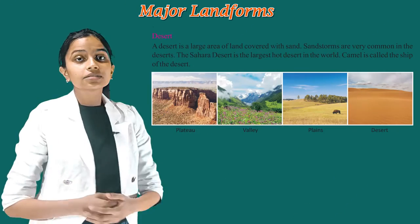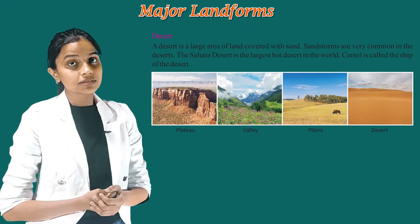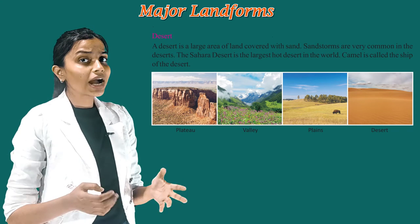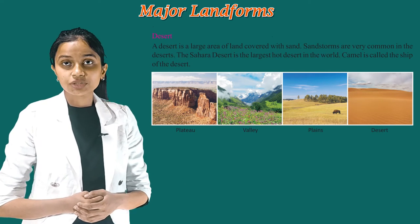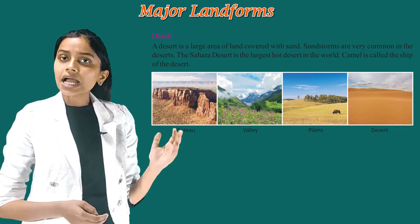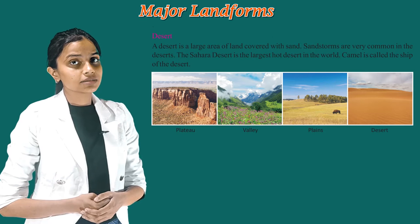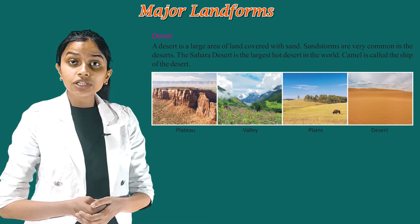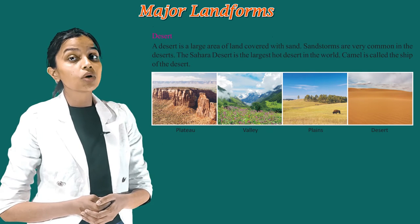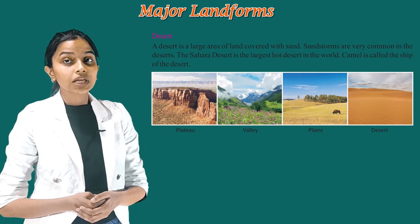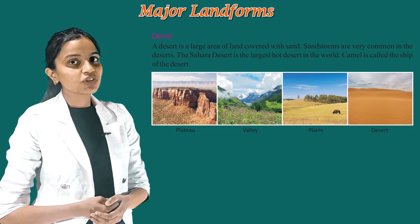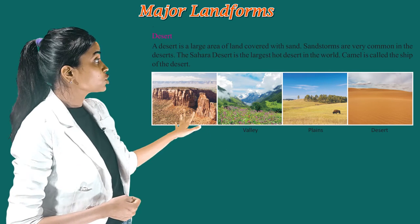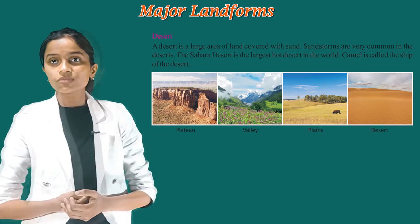Desert. A desert is a large area of land covered with sand. Sandstorms are very common in the deserts. The Sahara Desert is the largest hot desert in the world. Camel is called the ship of the desert. Now children, see the pictures of the various landforms.